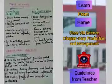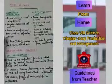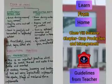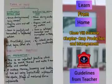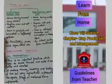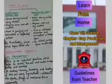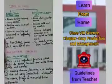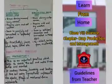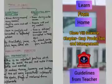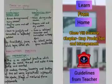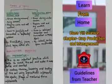Kharif crops are sown in June or July and harvested in September or October. Rabi crops, on the other hand, are sown in October or November and harvested in the month of March or April.